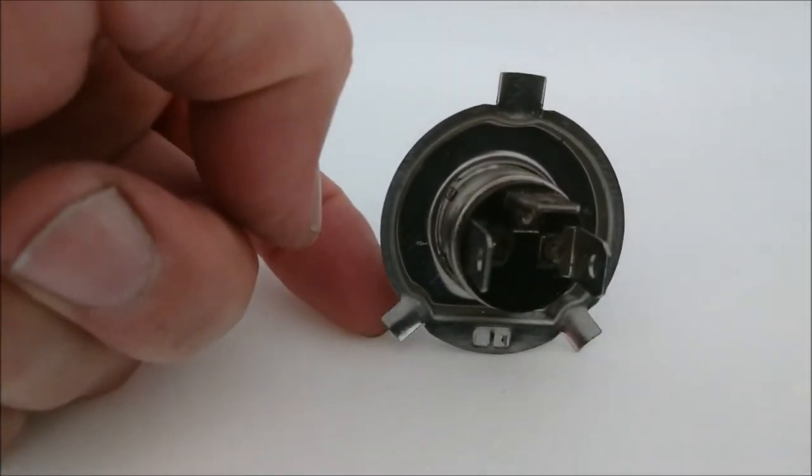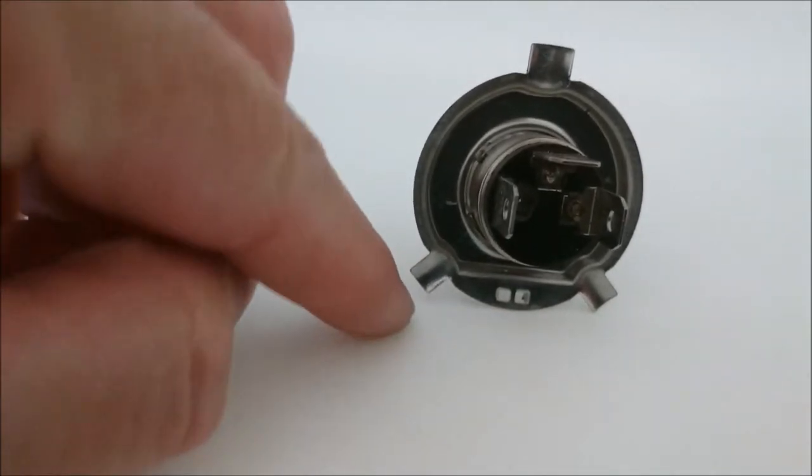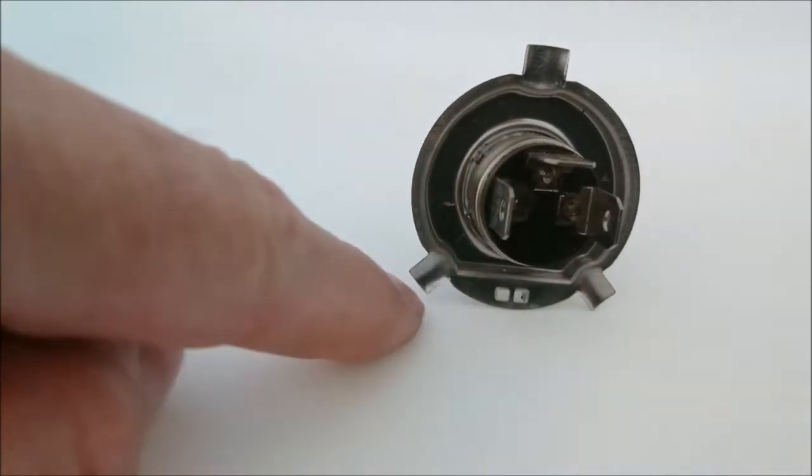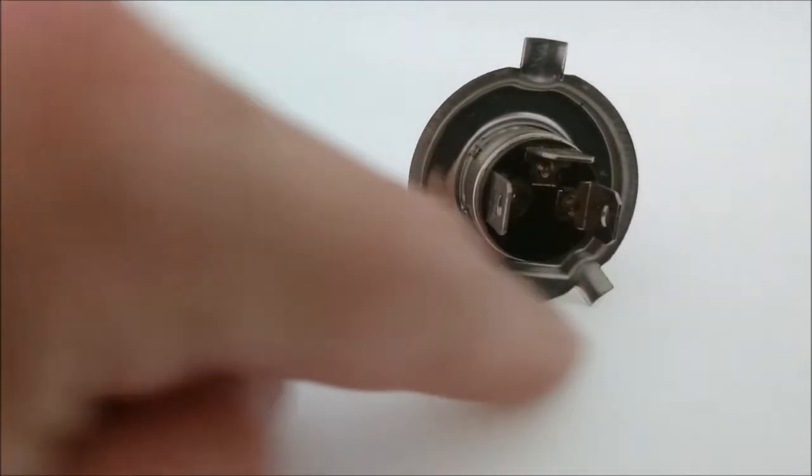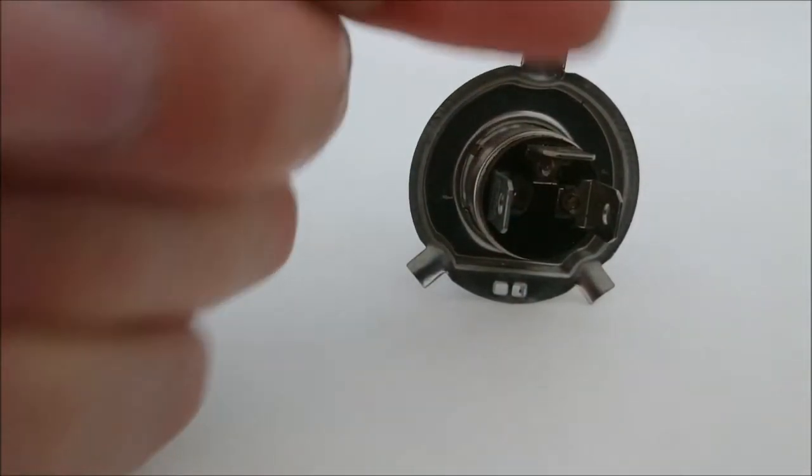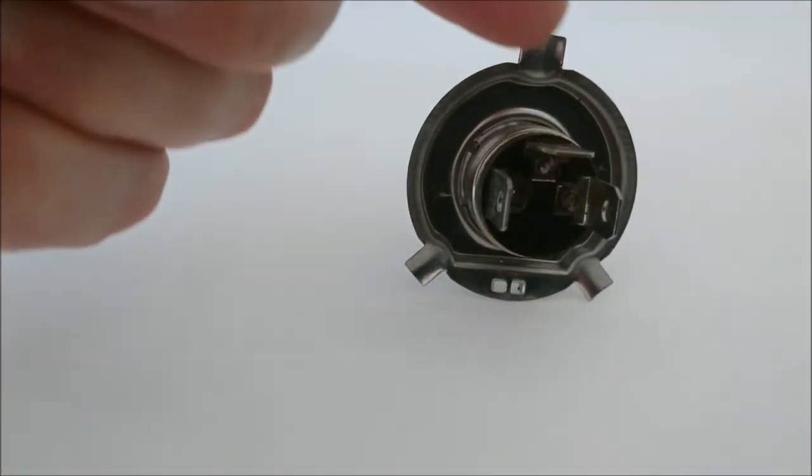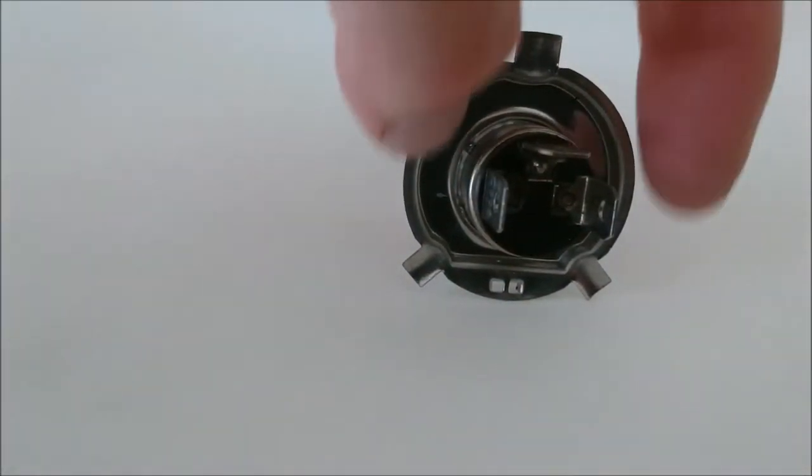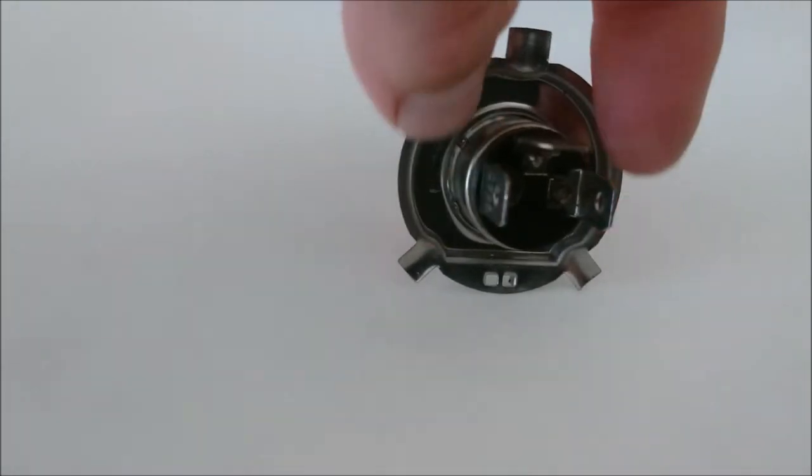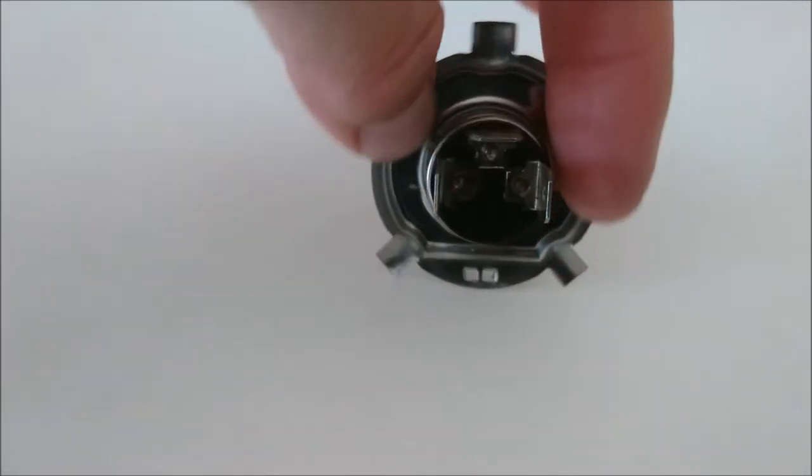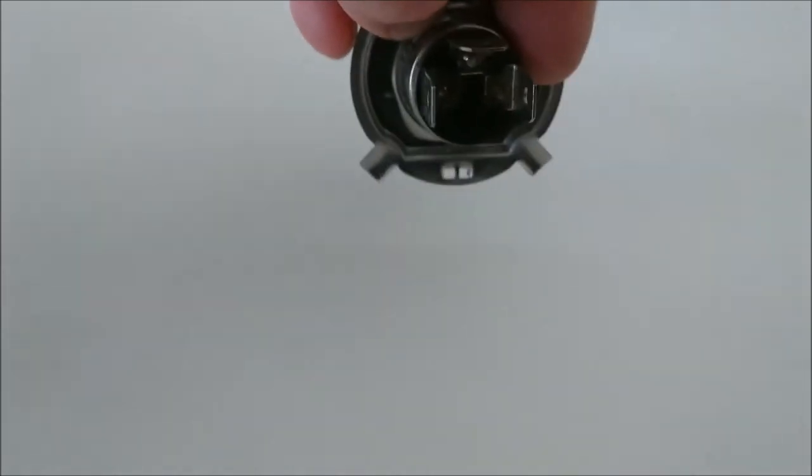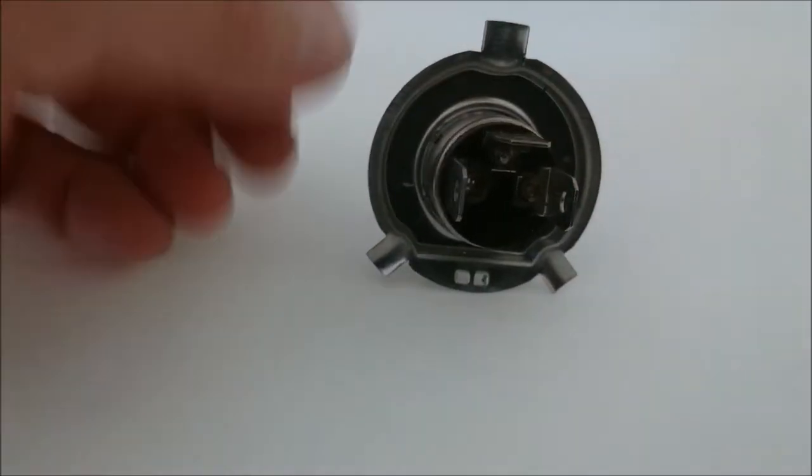That unhooks and drops down. And then you lift it up. And hook it. And then the two sides of the spring come up against the back of this bulb. Pushing it into the headlamp unit.